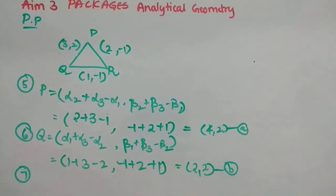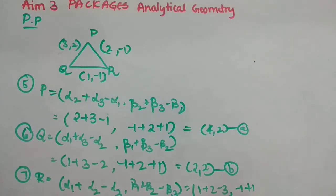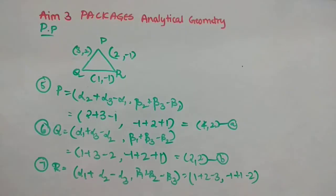Now, seventh one, we will see. So, it is to find the vertex R. So, vertex R, how we are going to find? Alpha 1 plus alpha 2 minus alpha 3 comma beta 1 plus beta 2 minus beta 3. That is equal to, what is the alpha 1 is 1 plus 2 minus 3 comma minus 1 plus 1, plus 1 minus 2.